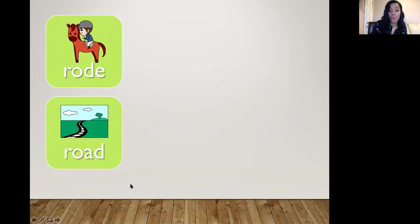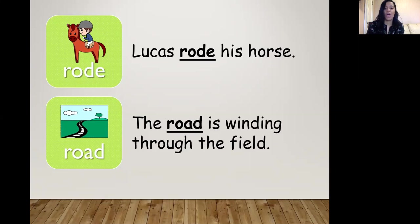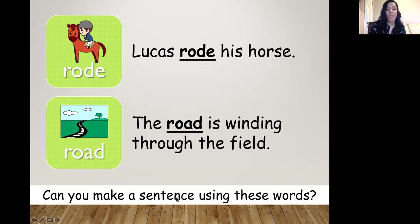How about road and rode? Here we have the past tense of ride. I ride a horse, but yesterday I rode a horse. So Lucas rode his horse. The road is winding through the field and the road is where we can drive our car. Try to make a sentence using these words as well.